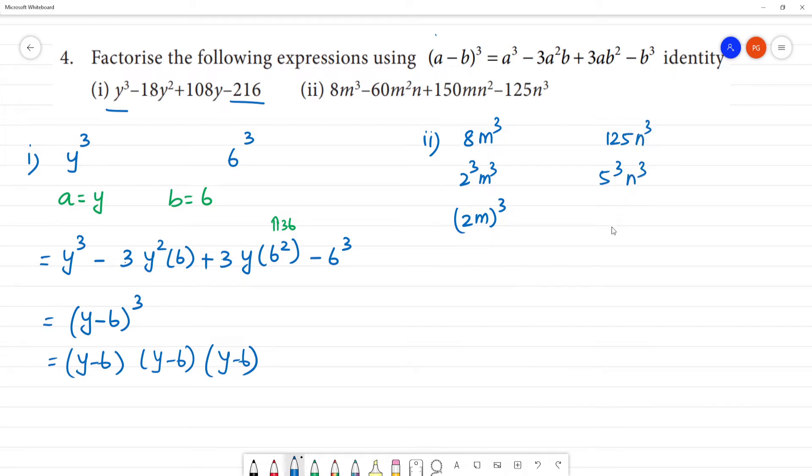So what is here? A is 2m, b is 5n. Now formula expand: 2m the whole cube minus 3 into a square - 2m into 2m - times b, plus 3 into 2m into 5n the whole square, minus 5n the whole cube.